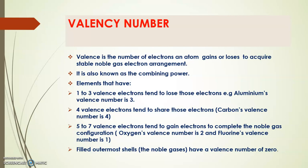Elements that have 1, 2, or 3 valence electrons tend to lose those electrons. For example, aluminium's valence number is 3. Then, elements with 4 valence electrons tend to share those electrons. For example, carbon's valence number is 4.